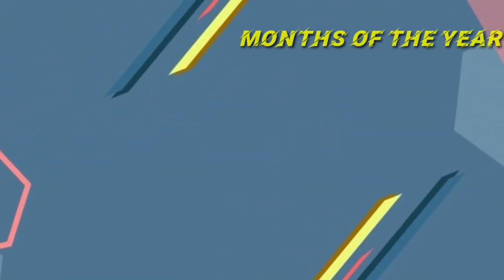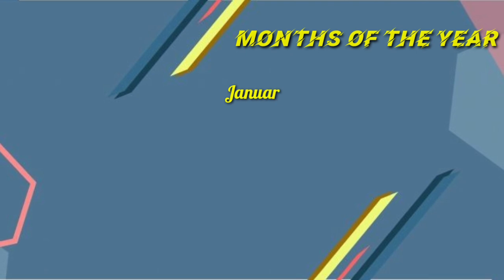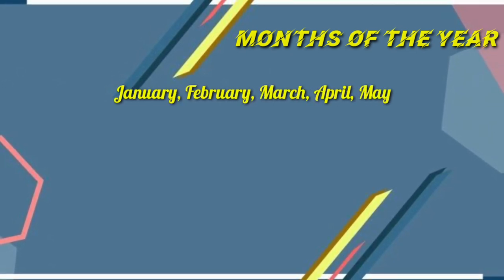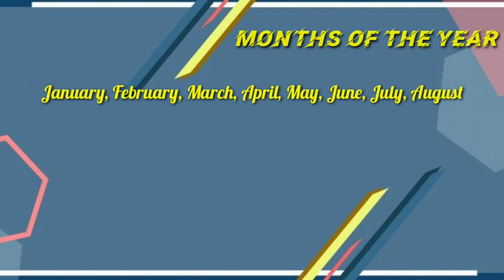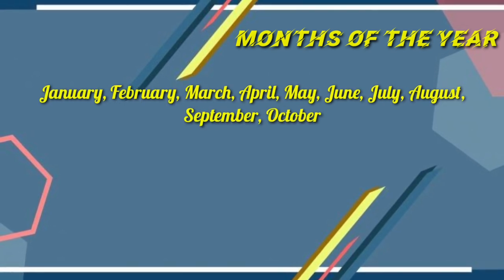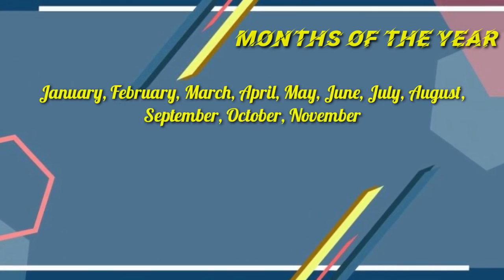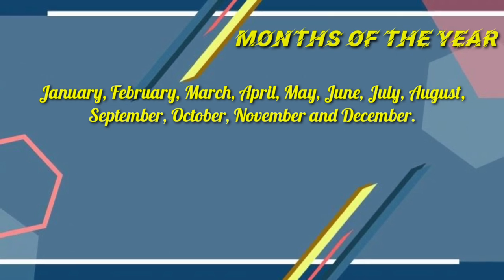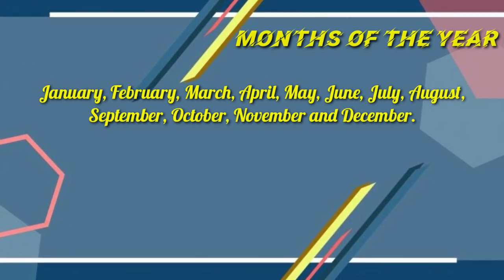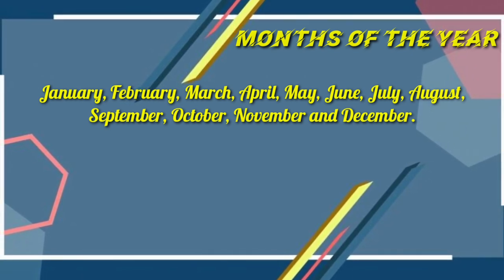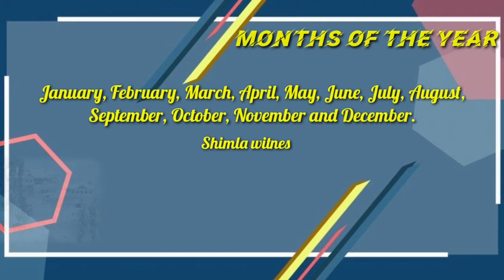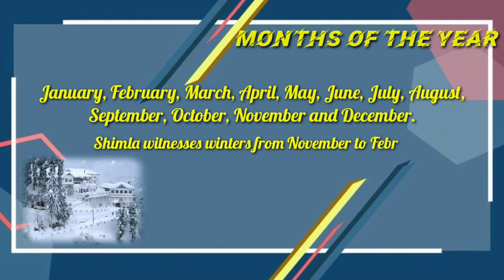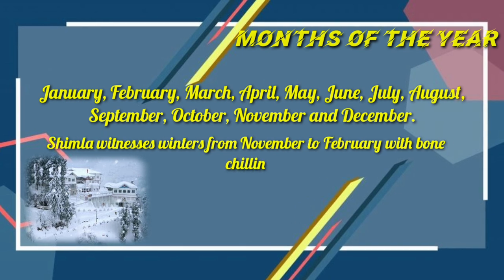Months of the year — January, February, March, April, May, June, July, August, September, October, November, December — the first letter is always a capital letter. Example: 'Shimla witnesses winters from November to February with bone-chilling cold weather.' The first letters of the months November and February are capital letters.